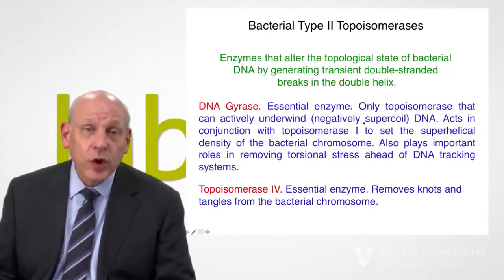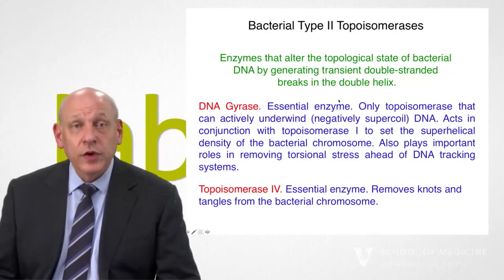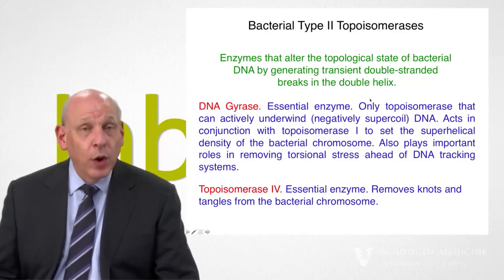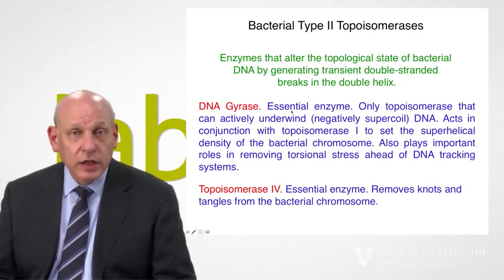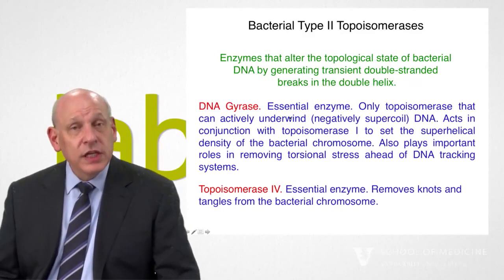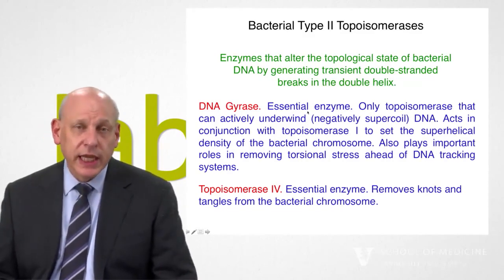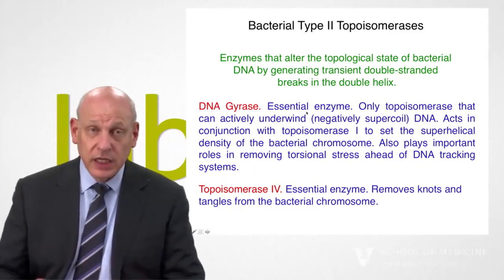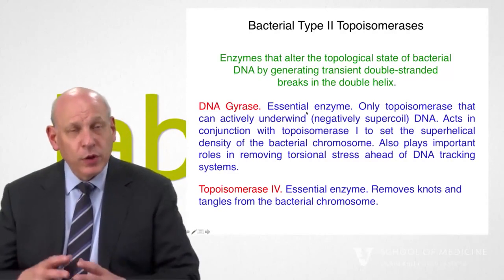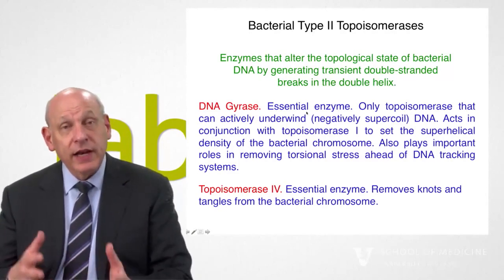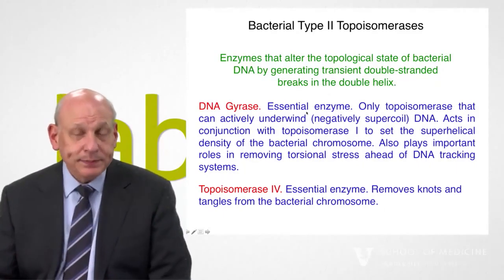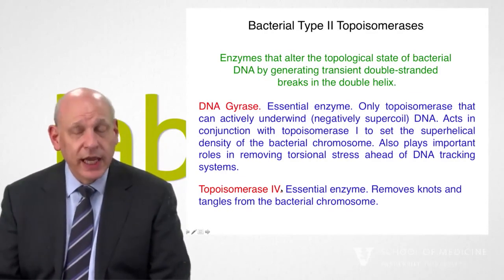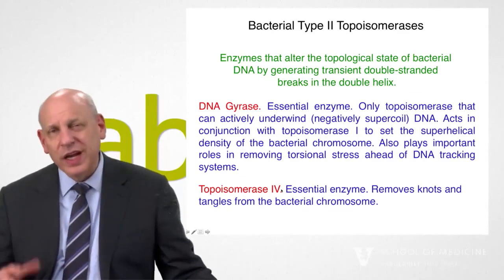In bacteria, there are two kinds of type II topoisomerases: DNA gyrase and topoisomerase IV, both really important enzymes. Gyrase is an essential enzyme that can actually underwind DNA by itself — it's the enzyme that puts torsional stress and negative supercoils into DNA. At the same time, it can remove positive supercoils or overwinds that happen ahead of replication forks and transcription complexes. Topoisomerase IV is the enzyme that takes knots and tangles out of DNA.